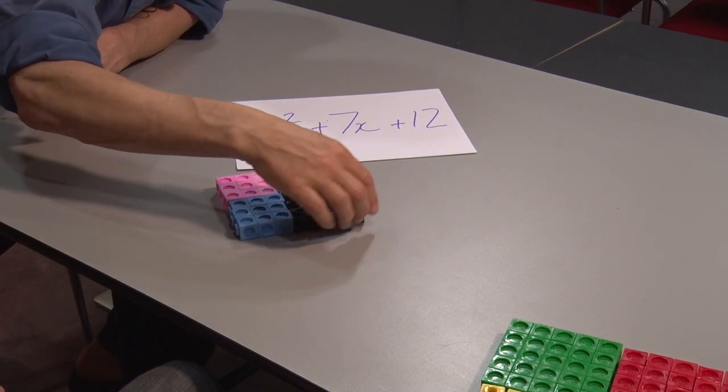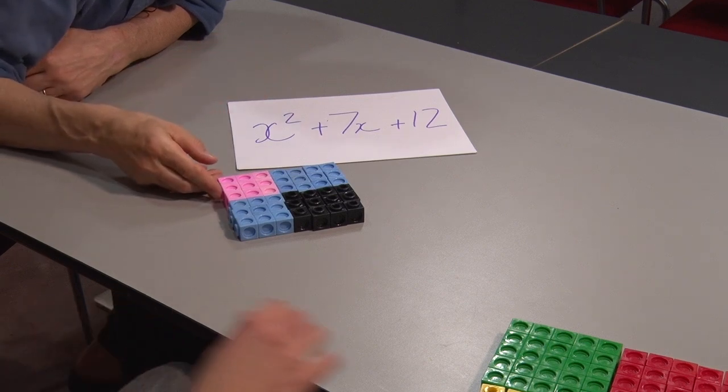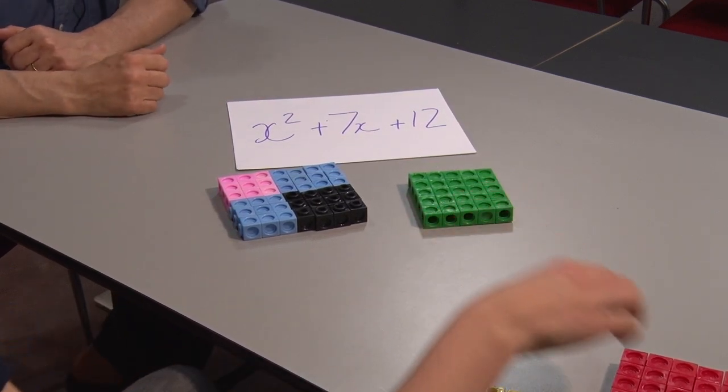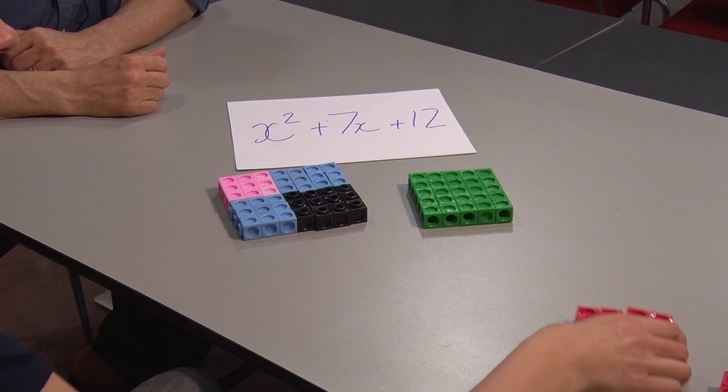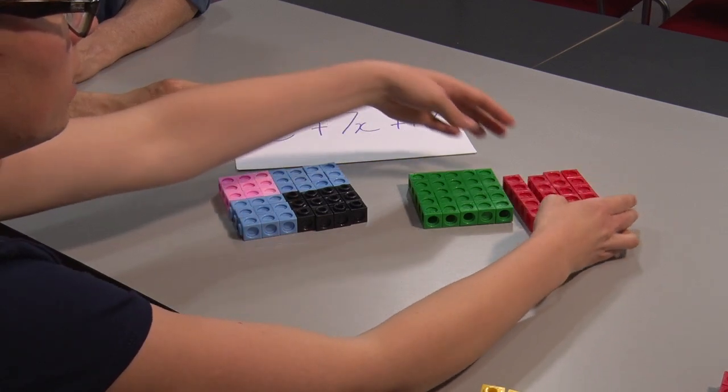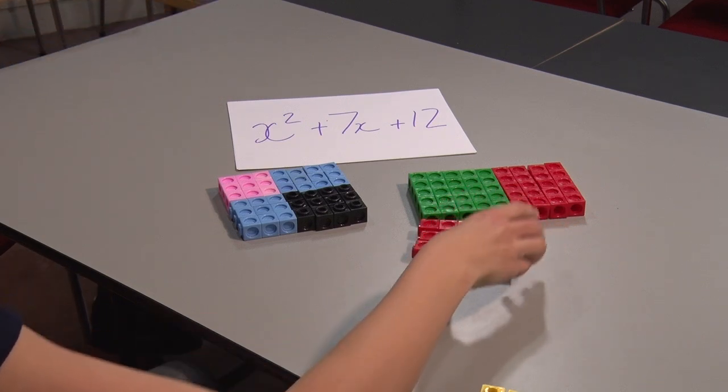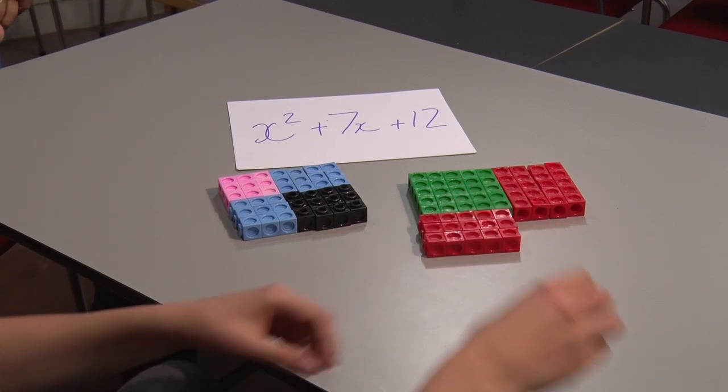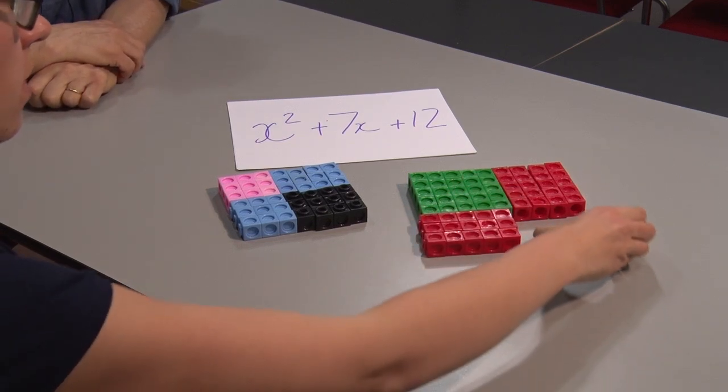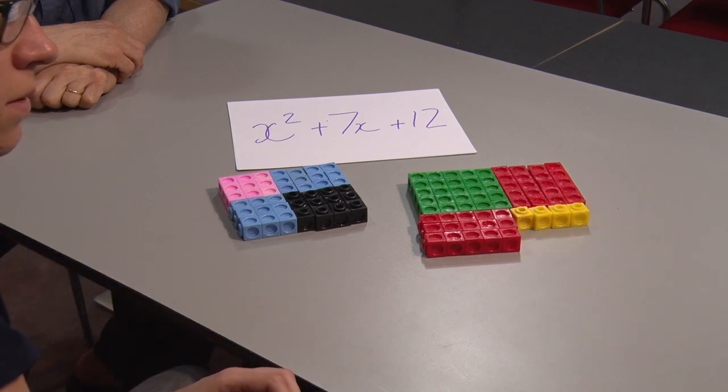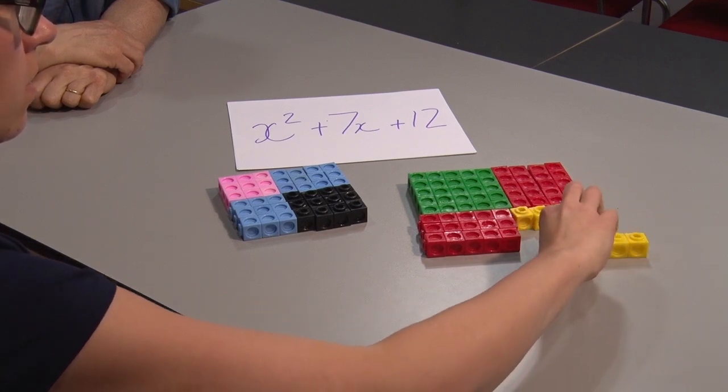Would that work in base 5? I think it might. Let's have a look. There's my x squared. What did you have? I had 4 x's—4 along there and 3 down here. So now I should be able to fit my 12 in here as well. Yes, that's going to work.